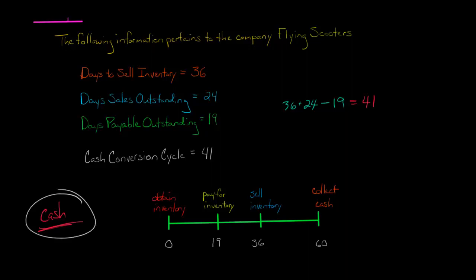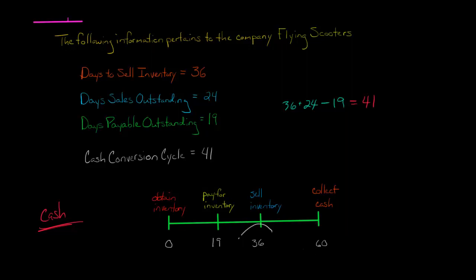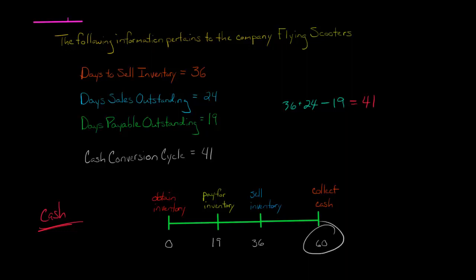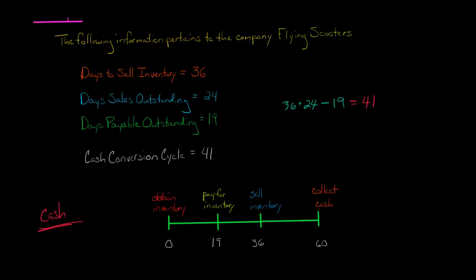It's very important that a company manages cash well. This company is paying out cash at day 19, but it's not actually receiving cash until day 60 — because they sell the inventory 36 days in, and then there's another 24 days before they actually collect the cash from the customers. So 60 is the length of the operating cycle, but the company paid out cash for the inventory on day 19. That gap between day 19 and day 60 — that's the 41 days, the cash conversion cycle.